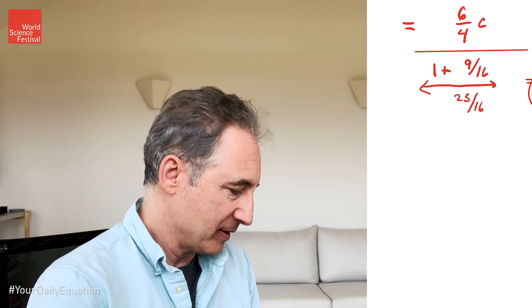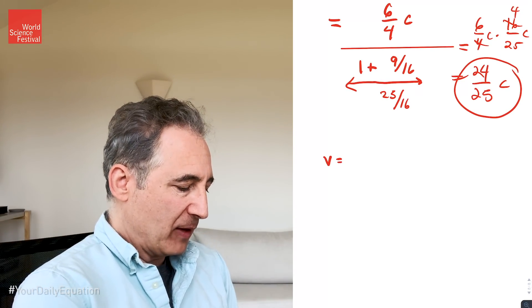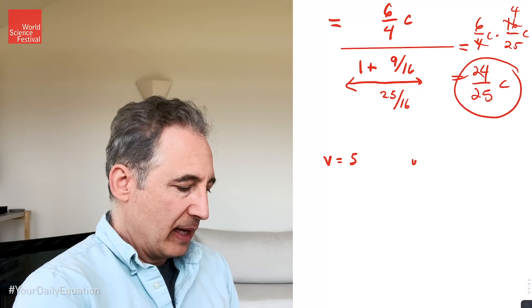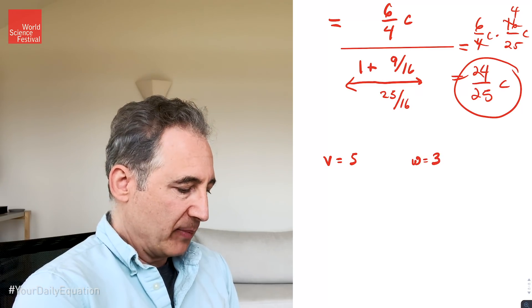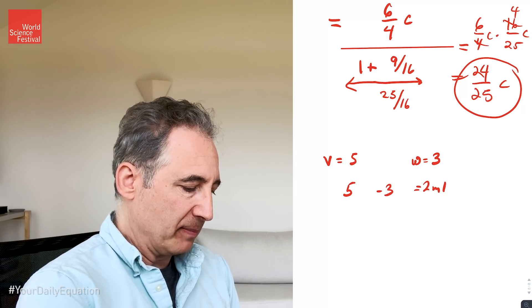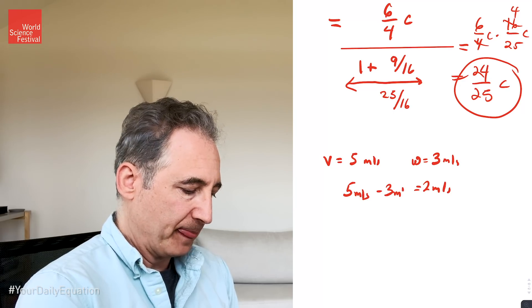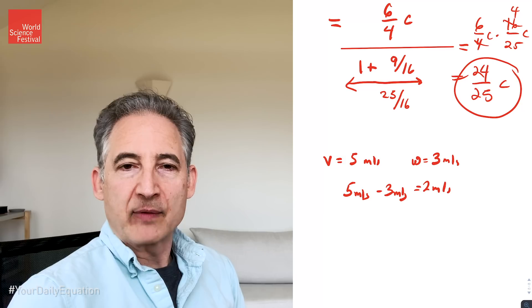So it's a beautiful formula. And it shows us, going back to the initial scenario with George and Gracie with the egg. So in that case, let me bring this up. In that particular case we had v equals 5 meters per second and w equals 3 meters per second. And we did this little calculation that 5 minus 3 equals 2 meters per second. That was the calculation we did in everyday life.